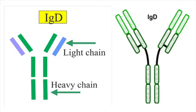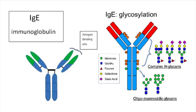Immunoglobulin IgD is present as a single molecule and its structure is similar to IgA. IgD also presents as a B cell antigen receptor. IgD mainly interacts with mast cells and is involved in allergic reactions.